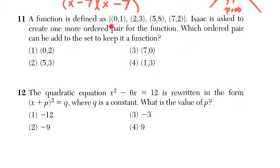In question 11, we're looking at a function is defined. Hizik is asked to create one more ordered pair for this function. Which ordered pair can he add to keep it a function? So this is specifically just looking at the X values.